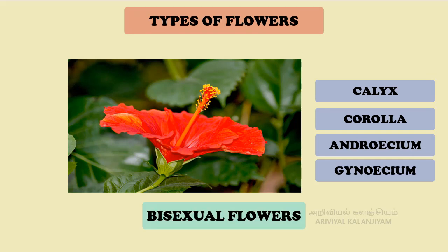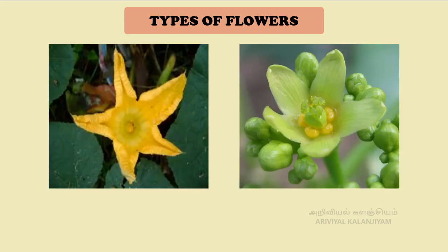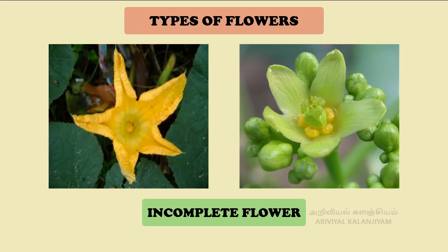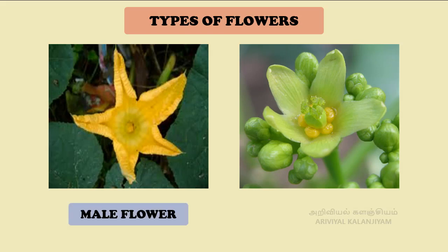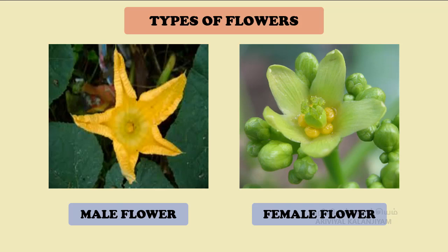Complete flowers are bisexual flowers. If any of these four whorls is missing, then it is called an incomplete flower. Incomplete flowers are unisexual flowers. There are two types of unisexual flowers: male flower and female flower. The one with androecium and without gynoecium is called a male flower, and the one with gynoecium and without androecium is known as a female flower. These are unisexual flowers.